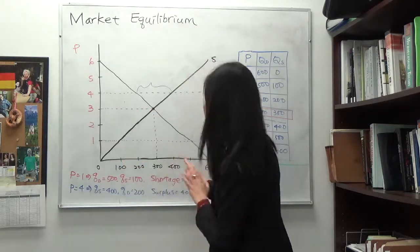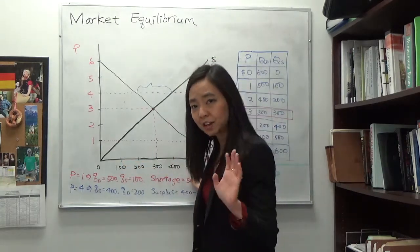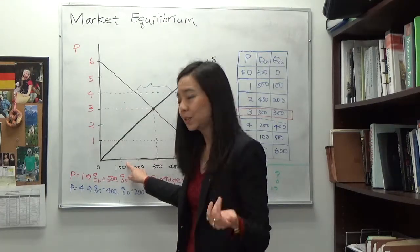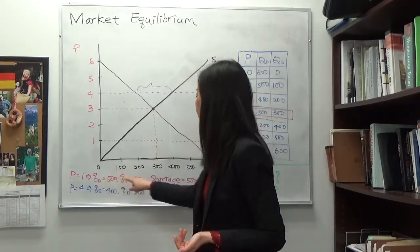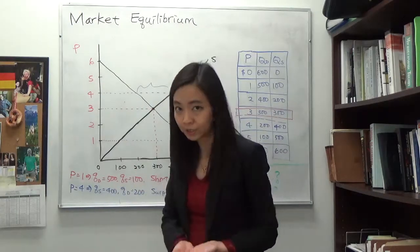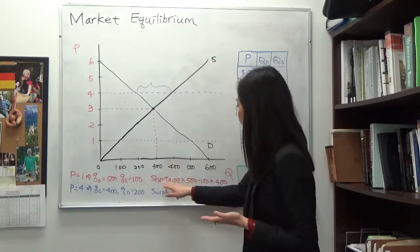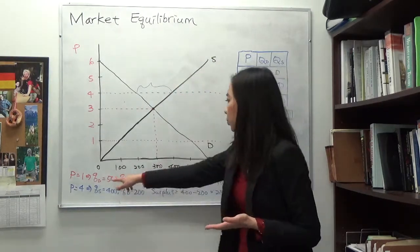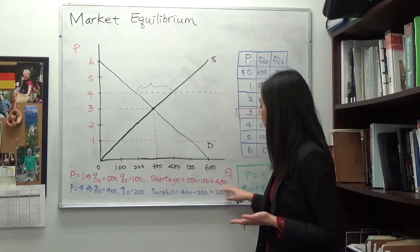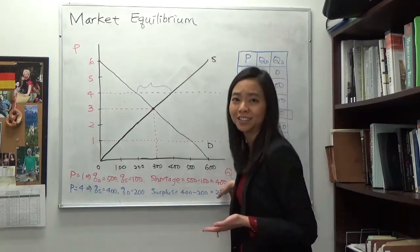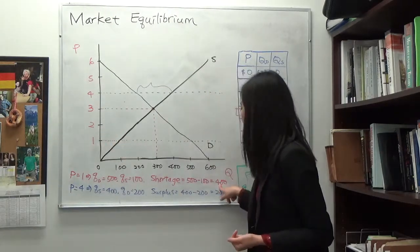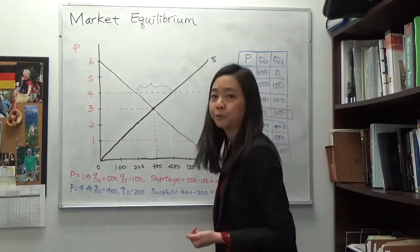You can see quantity demanded of 500 is not equal to quantity supplied of 100. Quantity demanded is higher than quantity supplied, meaning we have a shortage. The shortage is equal to 500 minus 100, which gives you 400. So when your price is one dollar, you have a shortage in the amount of 400.